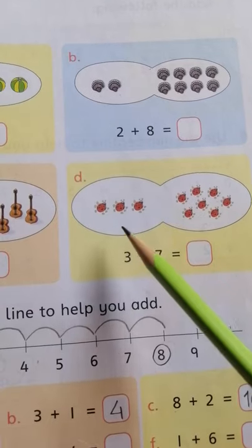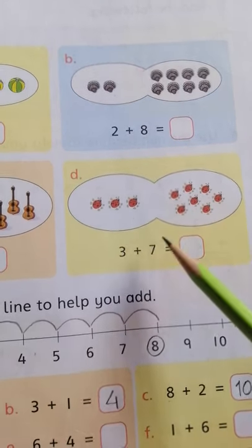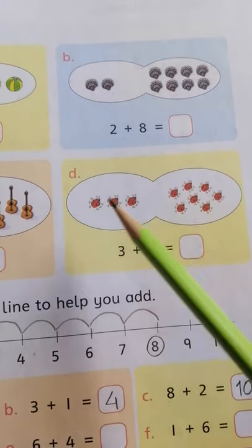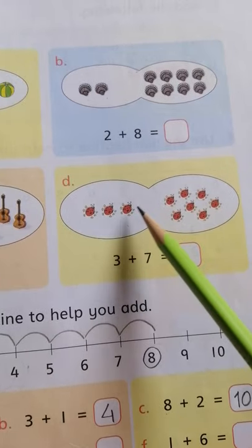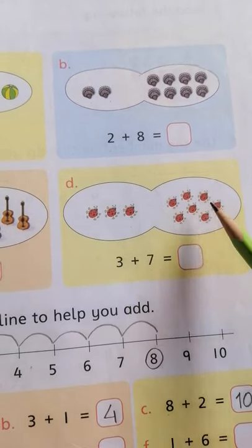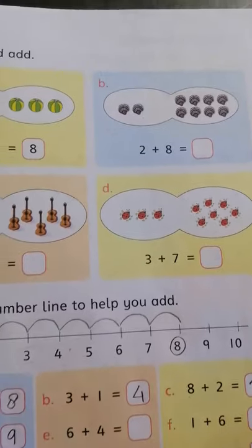And you can see in part D there are few ladybugs. 3 are here and 7 are here. Now count the whole ladybugs. These are 1, 2, 3, 4, 5, 6, 7, 8, 9, 10. So total 10 ladybugs are here.